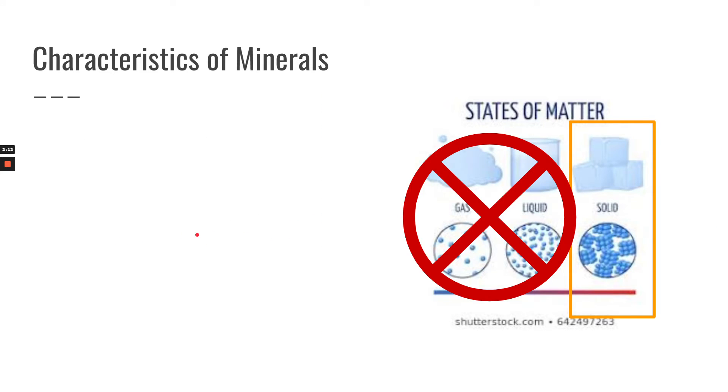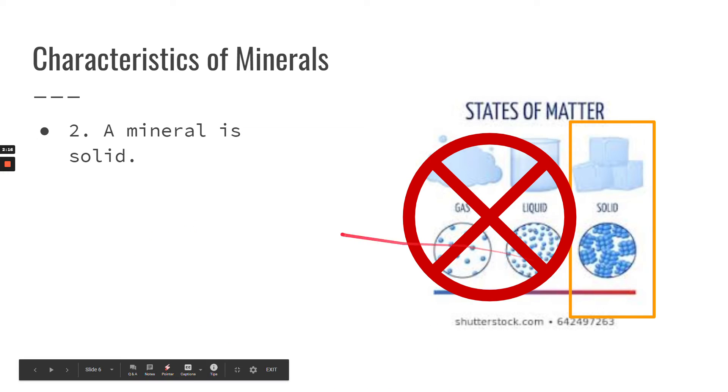The second characteristic of a mineral is that it is a solid. It cannot be a liquid. It cannot be a gas. It must be a solid in the phases of matter.